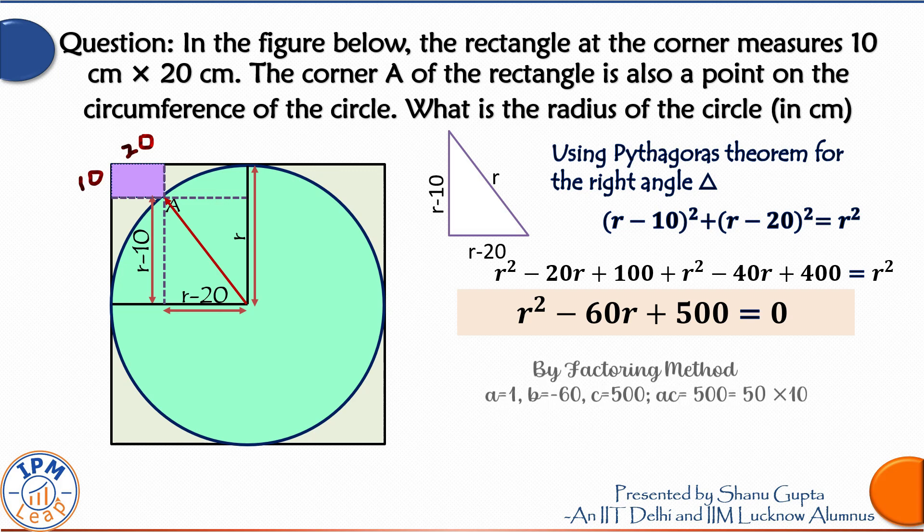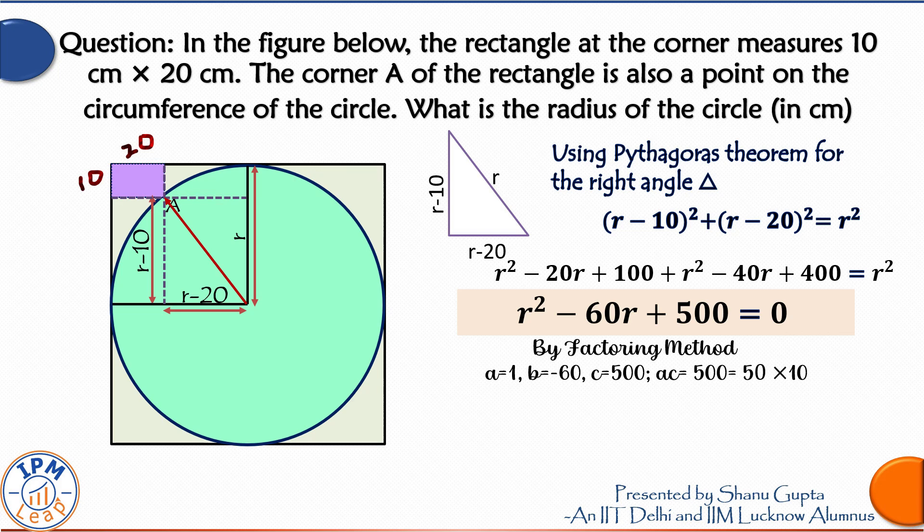Now by factoring method of solving quadratic equations, we look at the coefficients which are a is equal to 1, p is equal to minus 60, c is equal to 500. a into c is equal to 500, which can be written as 50 into 10. So splitting the middle term using this: R square minus 50R minus 10R plus 500 is equal to 0.